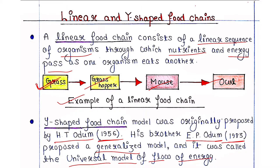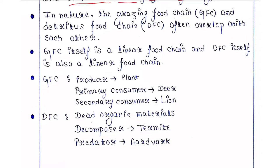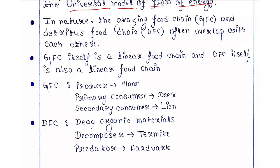In nature, the Grazing Food Chain (GFC) and the Detritus Food Chain (DFC) often overlap with each other. GFC itself is a linear food chain and DFC is also a linear food chain.